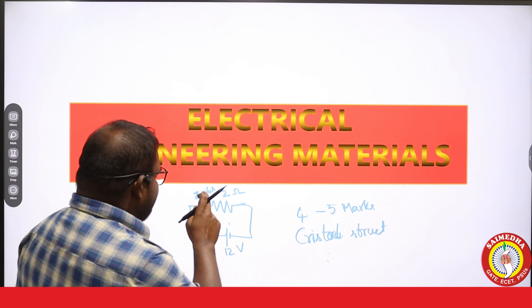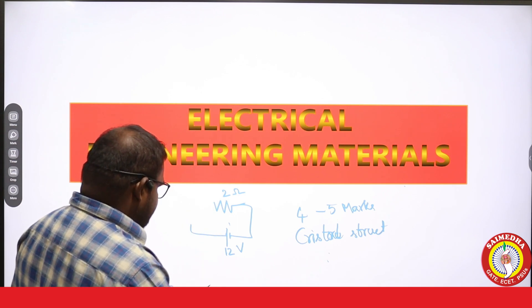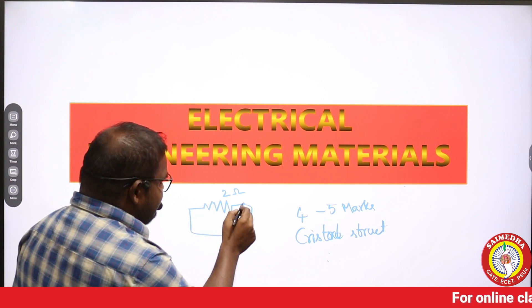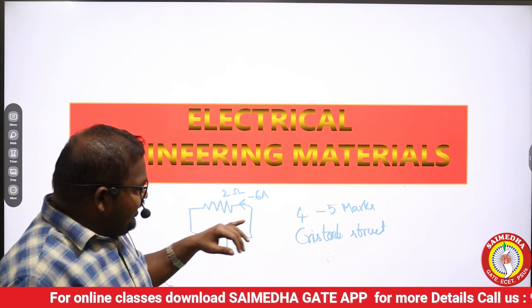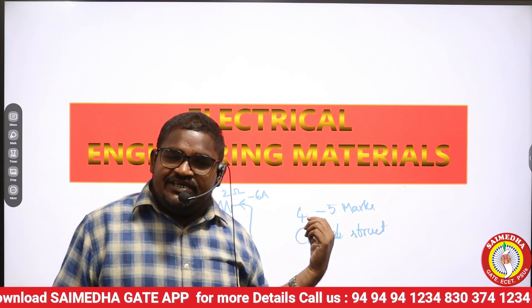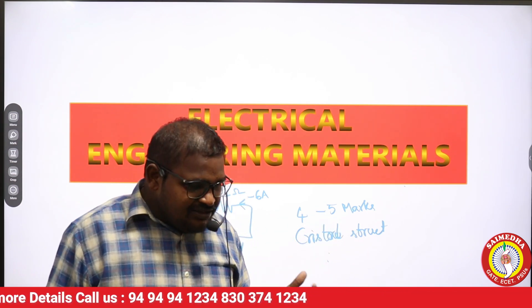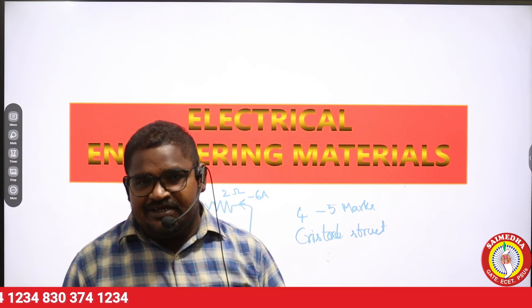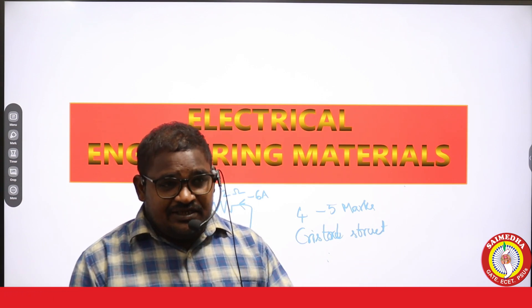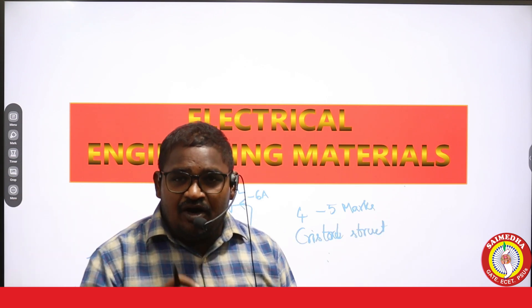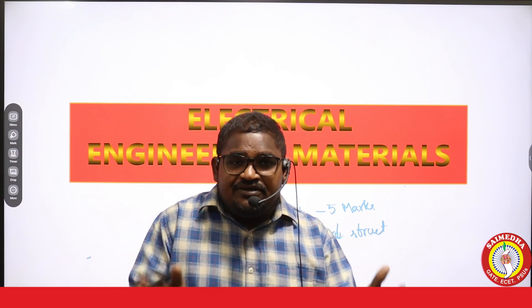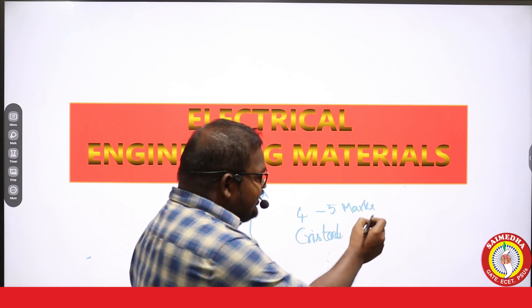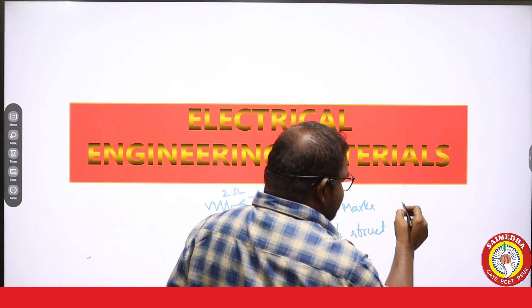Can I take the value of resistance as negative? In some problems like measurements or instruments, while finding the value of resistance — for shunt or series connections — you may get a negative value. But is it possible to have negative resistance, negative inductance, or negative capacitance? No, never. Resistance, inductance, and capacitance must always be between zero and infinity — they will never be negative.